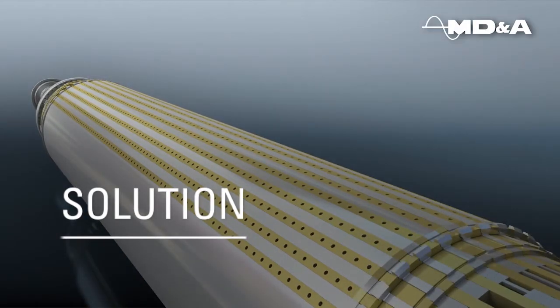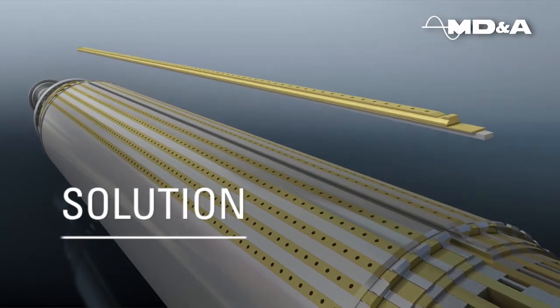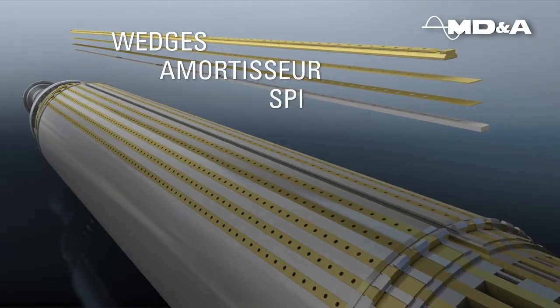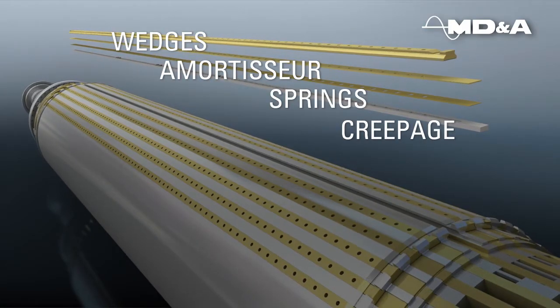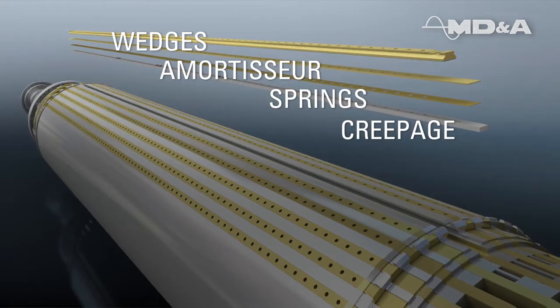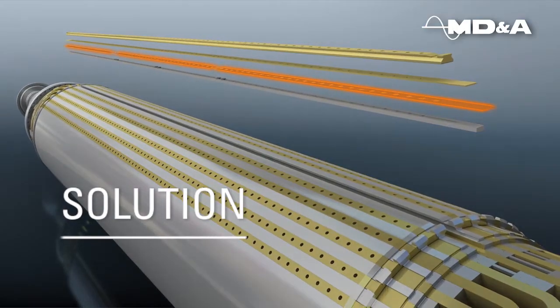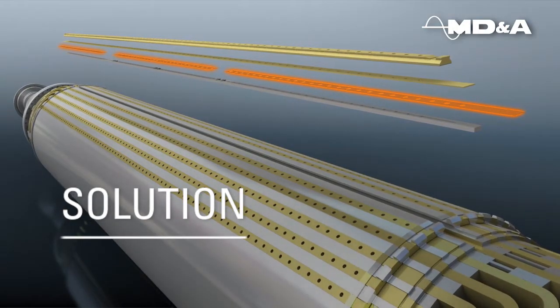This new design created by MDNA's experts has fewer springs and a top hat piece that secures the springs in place with the wedges and an amortiser over the creepage assembly. The original design had several springs all down through the slot. MDNA's new design reduces the number of springs to just three to hold in location.